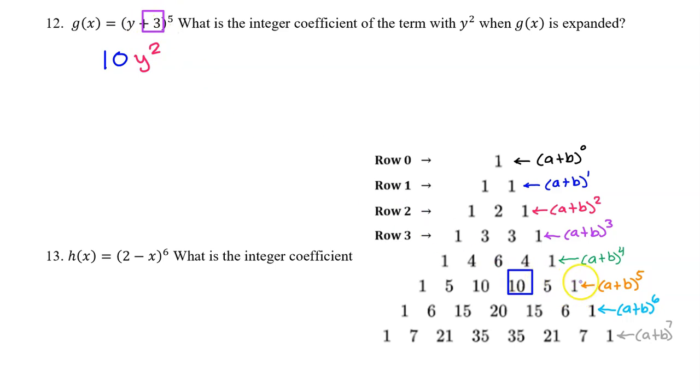This would start off on the right-hand side at 3 to the fifth power. So I know I am going to have 3 to some kind of a power. But it would be the fifth power here. And then as I move 1 to the left, this would be the fourth power.